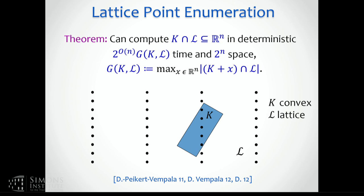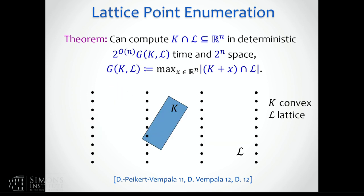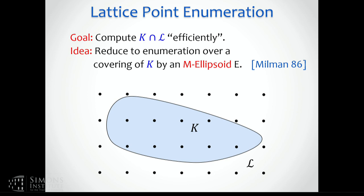This is something I proved together with Chris and my advisor Santosh Vempala during my PhD. The idea is to use a type of ellipsoid — called an M-ellipsoid, named for Milman — that is roughly the same shape as k. 'Roughly' means the number of shifts of this ellipsoid needed to fully cover k is single exponential, and similarly the number of shifts of k needed to cover the ellipsoid is also single exponential.